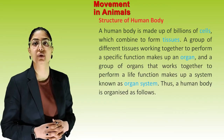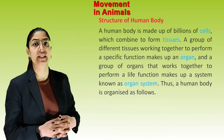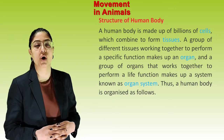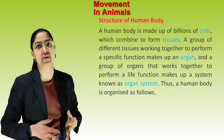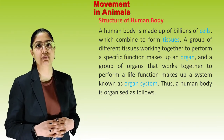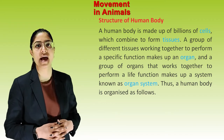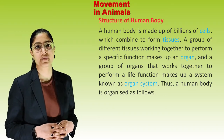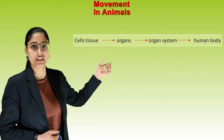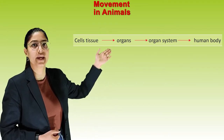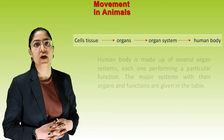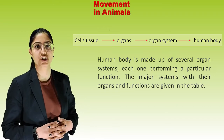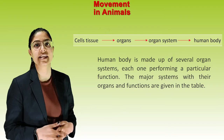Structure of the human body. A human body is made up of billions of cells which combine to form tissue. A group of different tissues working together to perform a specific function makes up an organ. A group of organs that work together to perform a life function makes up a system, known as an organ system. Thus, a human body is organized as follows: cells → tissues → organs → organ system → human body. The human body is made up of several organ systems, each performing a particular function.